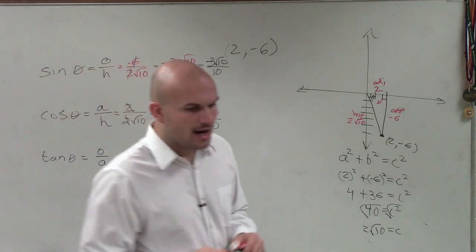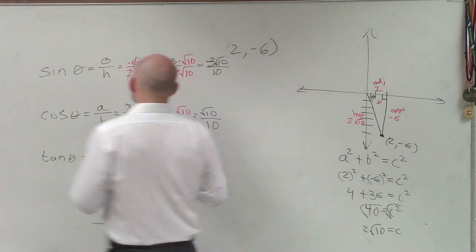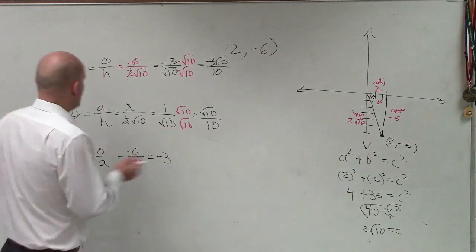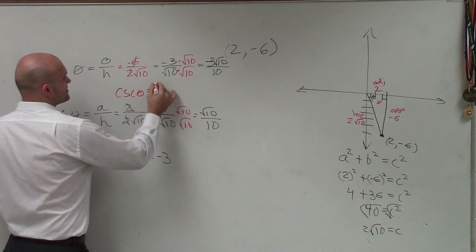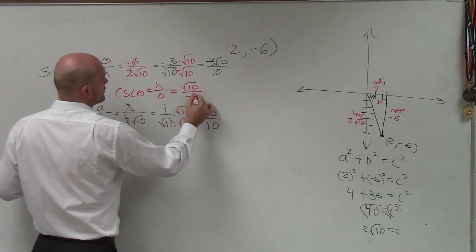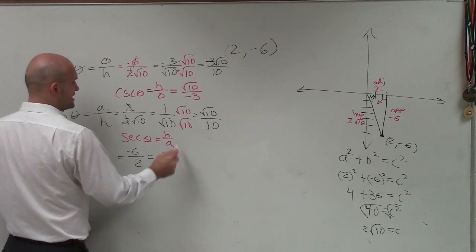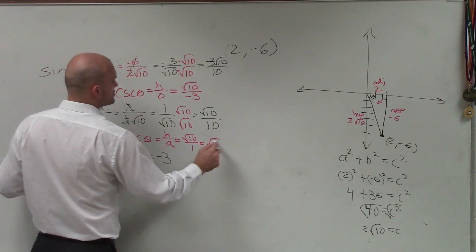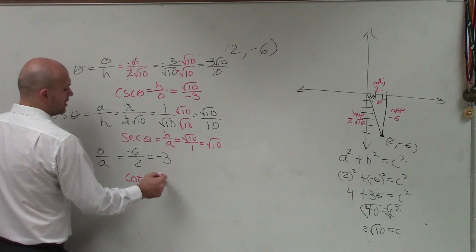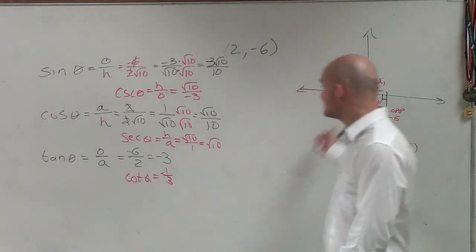Now, I don't want to reciprocate the rationalized final answers because I'd get a square root in the denominator again and have to re-rationalize. Instead, I'll take the reciprocal of the pre-rationalized values. The reciprocal of sine is cosecant of theta, which is hypotenuse over opposite — that's square root of 10 over negative 3. The reciprocal of cosine is secant of theta, which is hypotenuse over adjacent — square root of 10 over 1, which equals square root of 10. And the reciprocal of tangent is cotangent of theta, which is 2 over negative 3, giving us negative 1 third. That's how you evaluate all six trigonometric functions when given a point not on the unit circle.